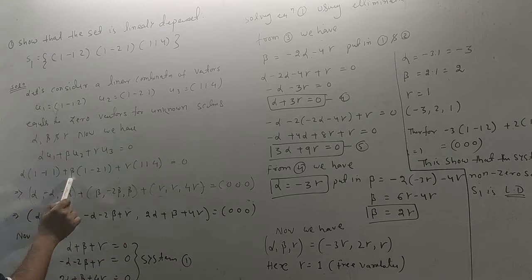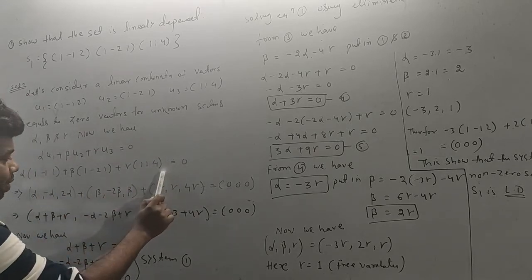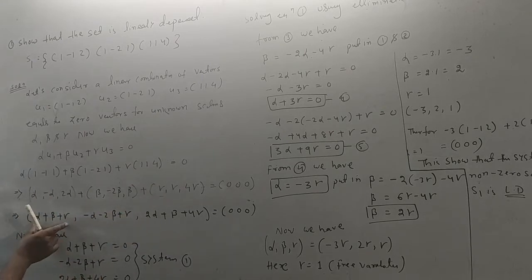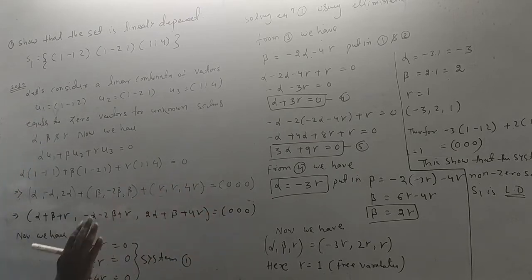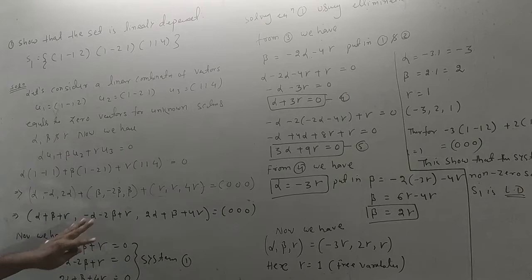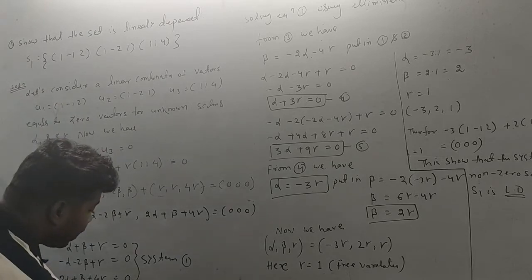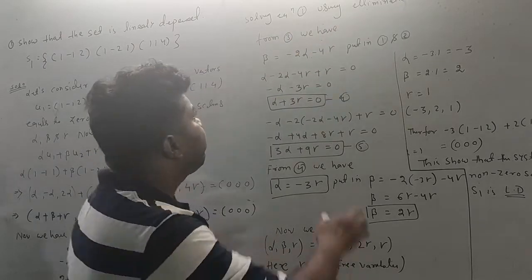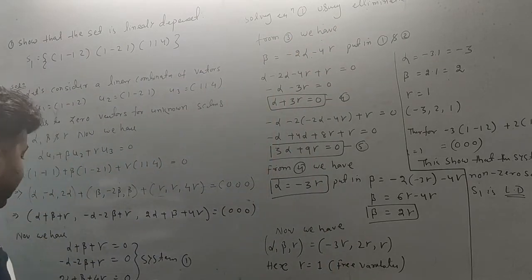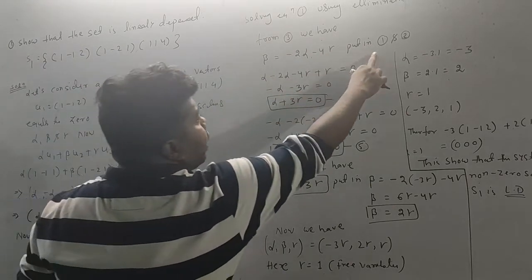Substituting the vectors: alpha into U1, beta into U2, gamma into U3. We take the first, second, and third vector components and set them equal to the zero vector, giving us a system of equations: eq1, eq2, eq3. From eq3 we use elimination, substituting minus 2·alpha minus 4·gamma into equations one and two.